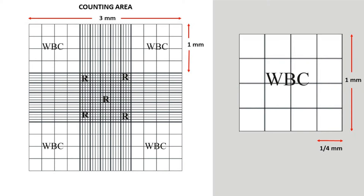Every WBC count square is 1 by 1 mm, which is again divided into 16 small squares by 3 vertical and 3 horizontal lines. Every small square is 1/4 mm in length and width.